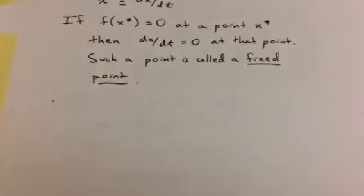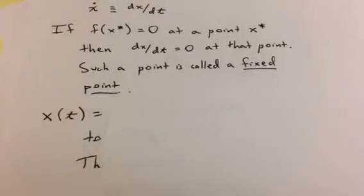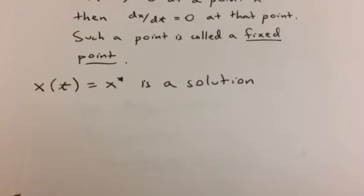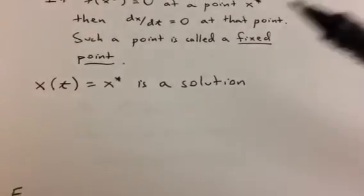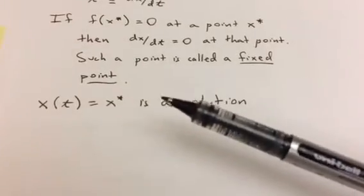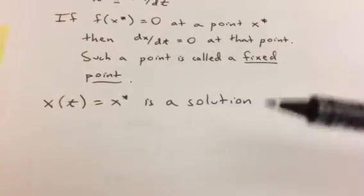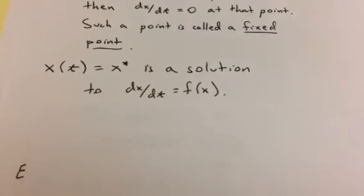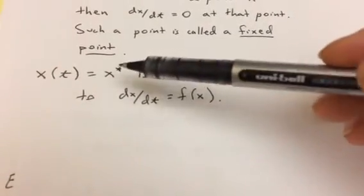Associated with a fixed point, we have a couple more things to say. First of all, x of t equals x star, where x star is a fixed point, is always a solution to the differential equation. Why would that be? Well, let's see. This is saying that for every time t, the position is just this constant position x star,